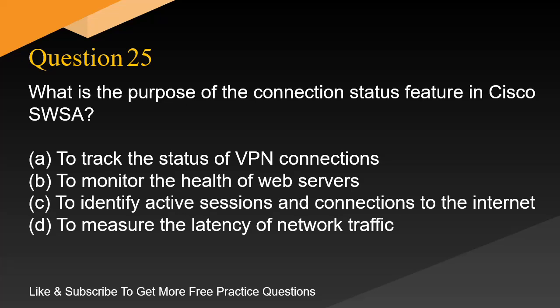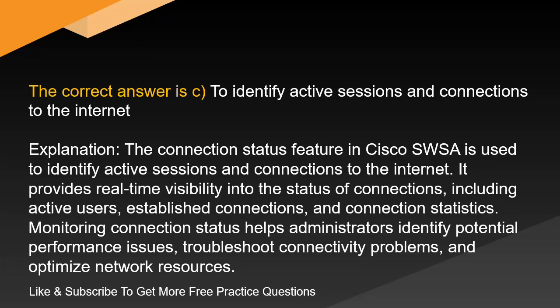Question 25. What is the purpose of the connection status feature in Cisco SWSA? A. To track the status of VPN connections. B. To monitor the health of web servers. C. To identify active sessions and connections to the internet. D. To measure the latency of network traffic. The correct answer is C. To identify active sessions and connections to the internet. Explanation. The connection status feature in Cisco SWSA is used to identify active sessions and connections to the internet. It provides real-time visibility into the status of connections, including active users, established connections, and connection statistics. Monitoring connection status helps administrators identify potential performance issues, troubleshoot connectivity problems, and optimize network resources.